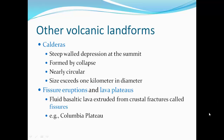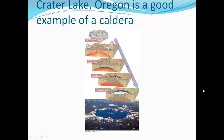Fissure eruptions and lava plateaus: fluid basaltic lava extrudes from crustal fractures called fissures. The Columbia Plateau has many such fissures with many basaltic lava flows over its surface. Crater Lake, Oregon, is a great example of caldera formation. A massive eruption emptied out the magma chamber of Mount Mazama, the top of the mountain collapsed inward, forming a very large crater that slowly filled in with rainwater — since there's no real drainage system — forming Crater Lake.